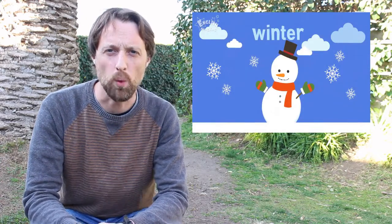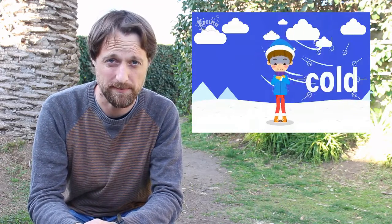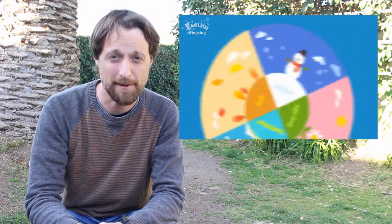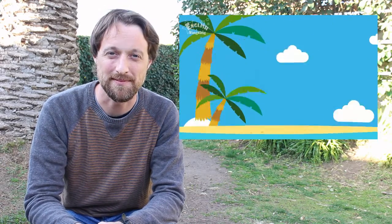After autumn we have winter. The weather is cold in winter. After winter we have spring. The plants grow in spring. And after spring we have summer. The weather is hot in summer.